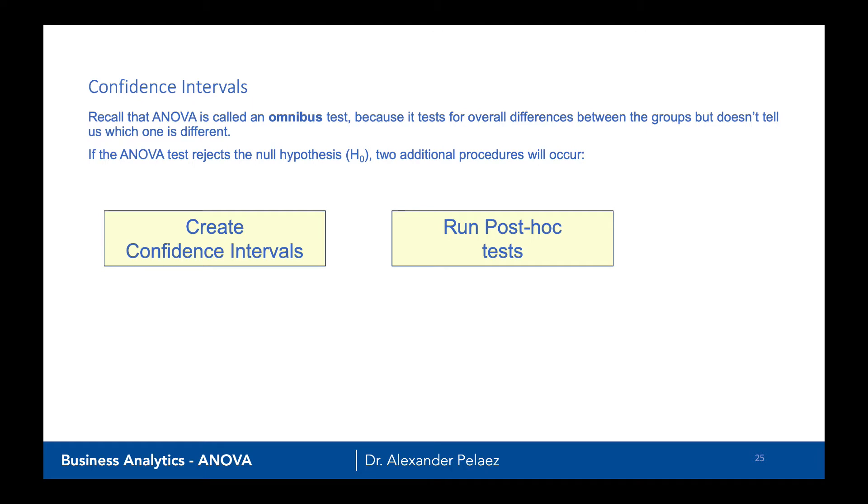We have two things that we need to do. We need to compute confidence intervals for the differences between the groups. What is the difference between group one and group two? What is the difference between group one and group three? What's the difference between group two and group three?